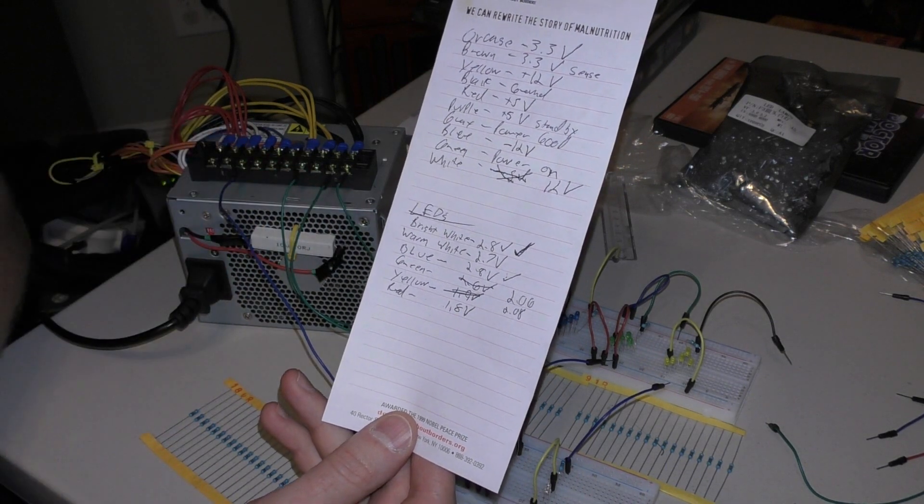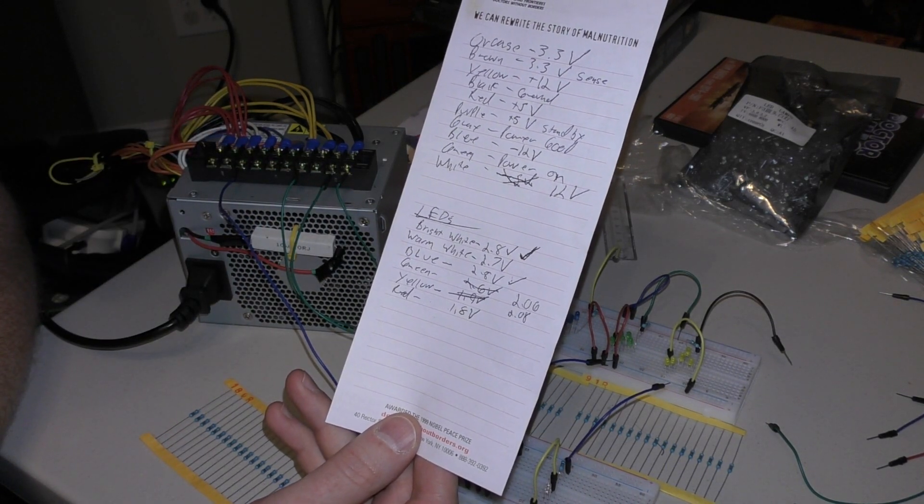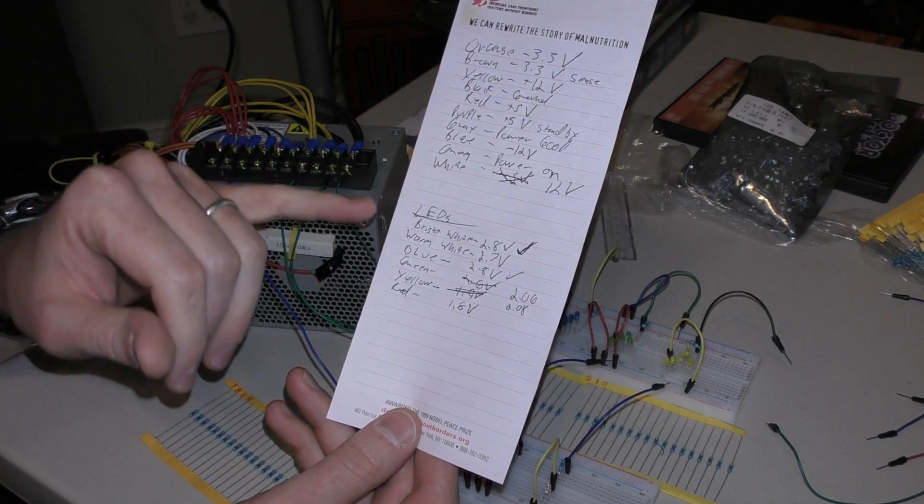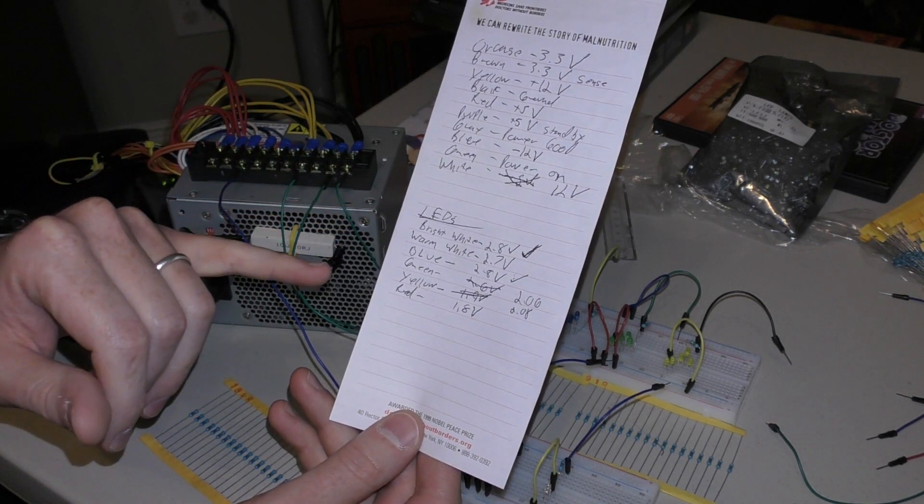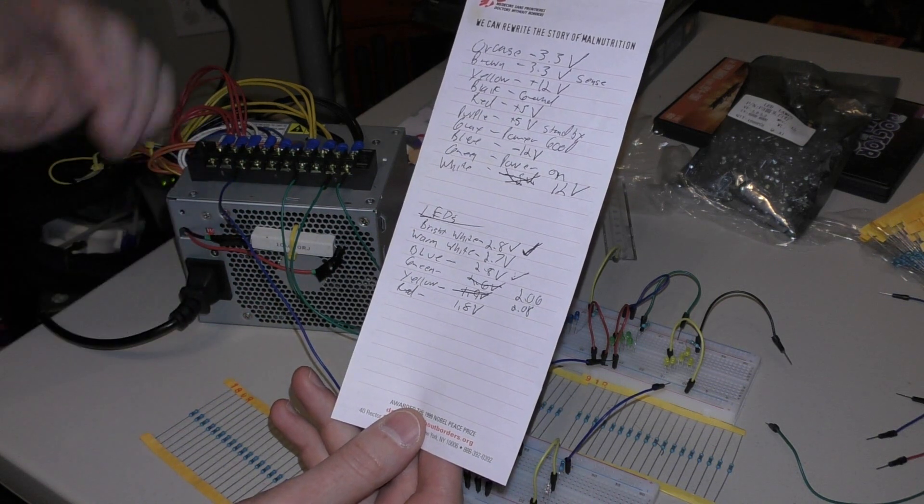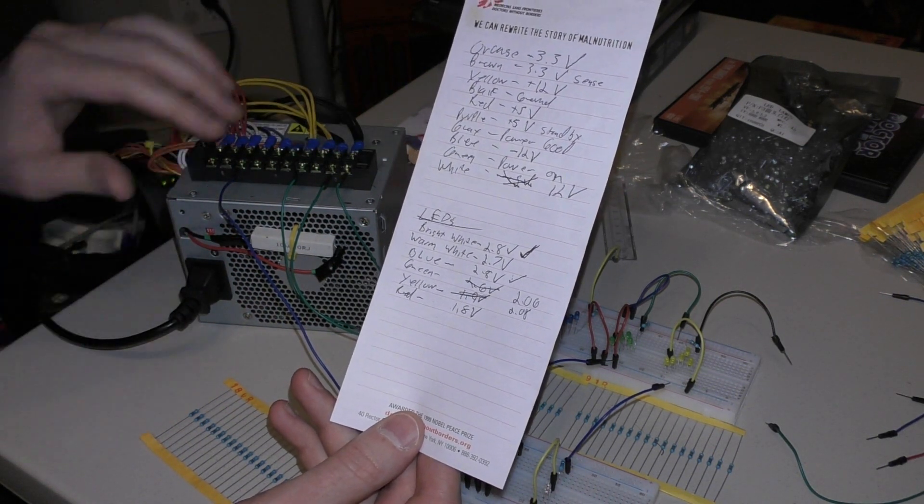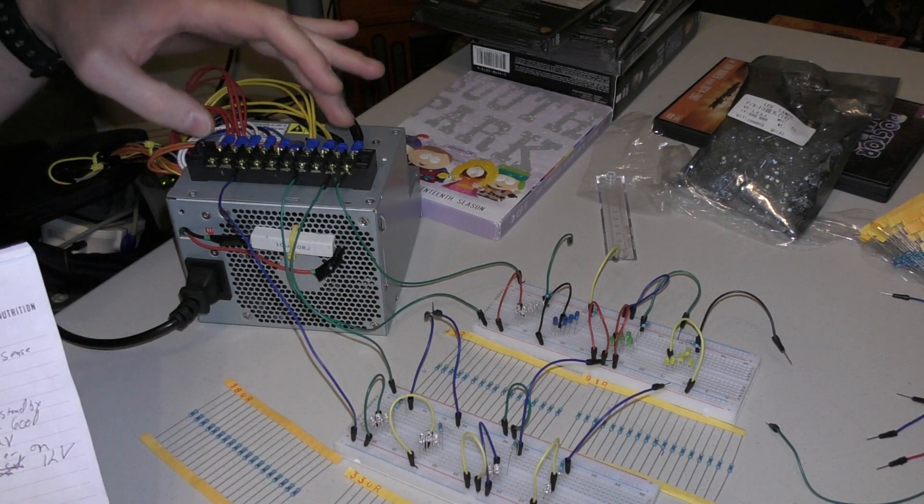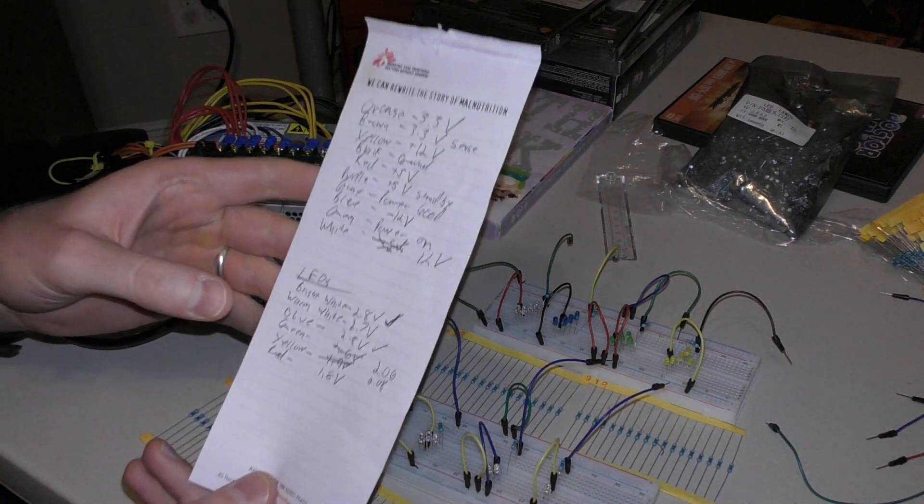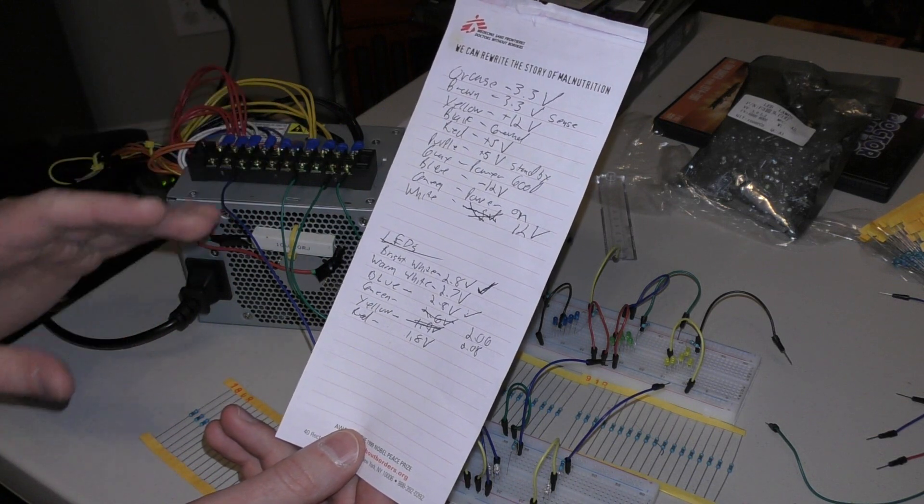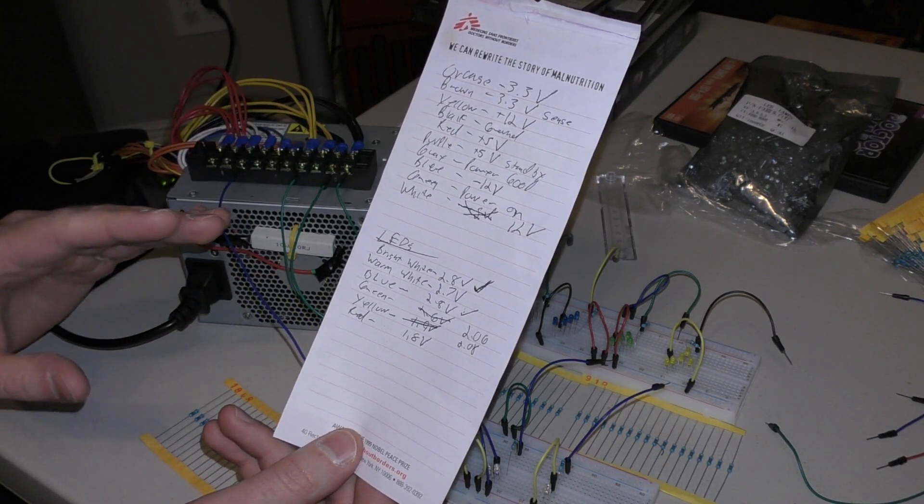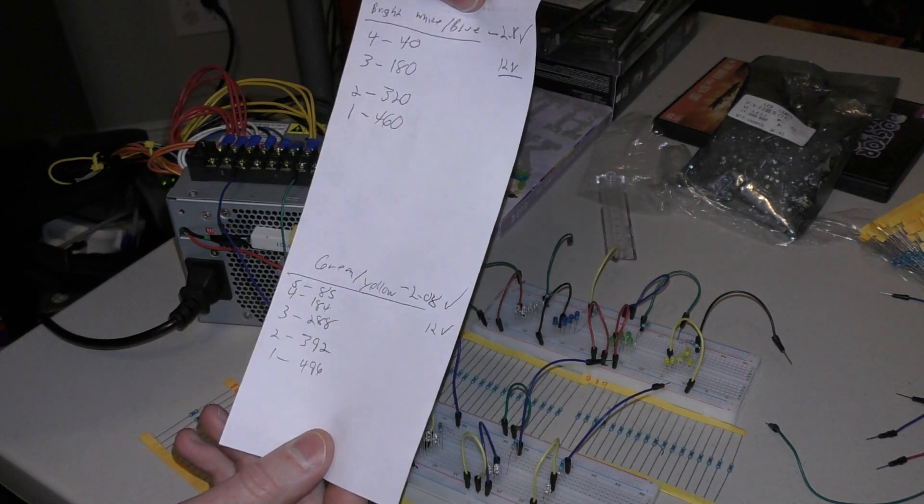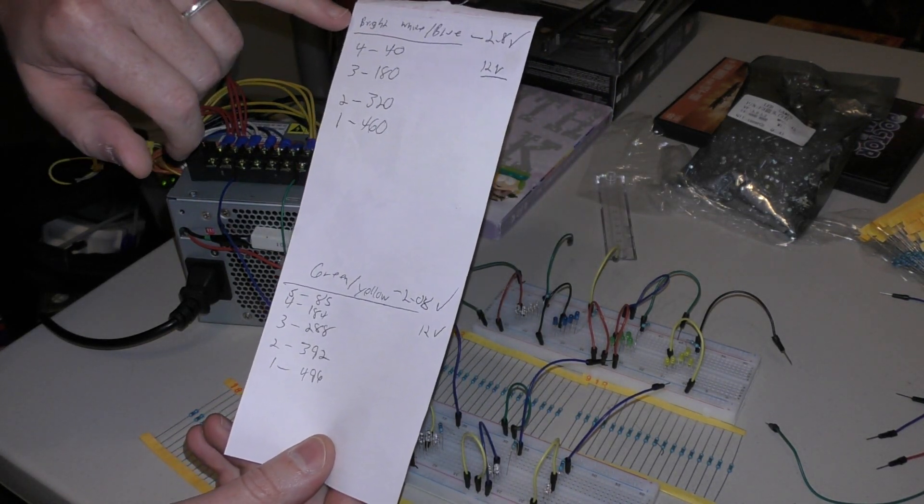If we look on the interwebs or measure it, which I did both, you can see the various LEDs have these various voltage drops across them. We can use these to figure out what type of resistors we need and how many of them we can push and still get full brightness with certain voltages. I've got everything here set up on 12 volts.